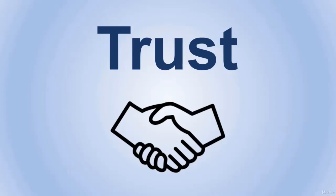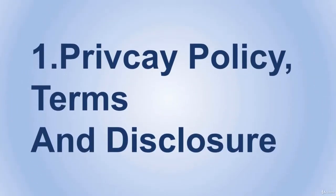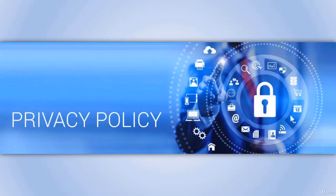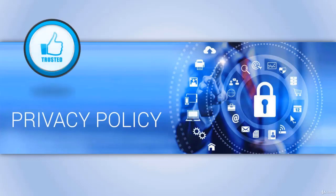The second pillar of ranking is trust. Trust is a combination of many factors that search engines use to discover how trustworthy a website is. The more trustworthy it is, the better ranking it will get. Number one: privacy policy, terms, and disclosure. These things may not directly affect your ranking, but they do affect your trust factor. A website that has a privacy policy is seen as more legitimate and trustworthy. You should definitely consider having those on your website.